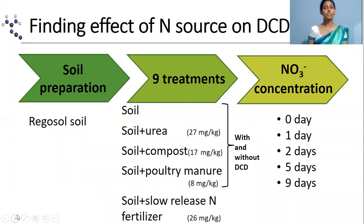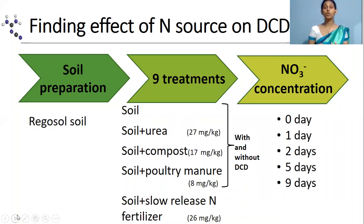After that, nine different treatments were introduced into these leaching columns. The first treatment was the control treatment. After that, three different nitrogen sources — urea, compost, and poultry manure — were added to leaching columns with and without DCD separately.